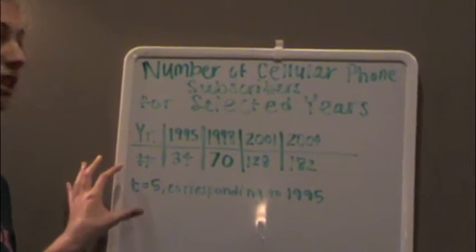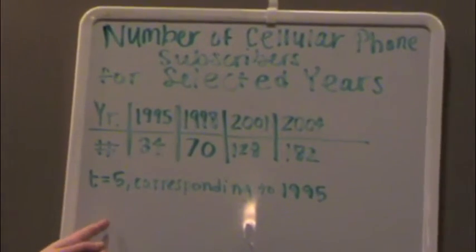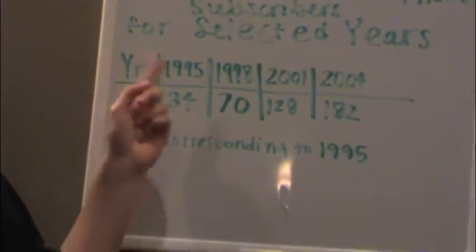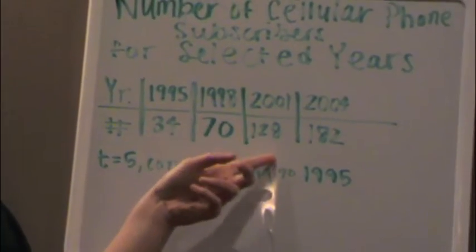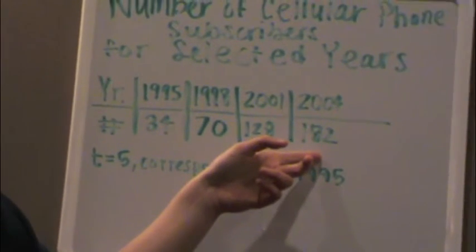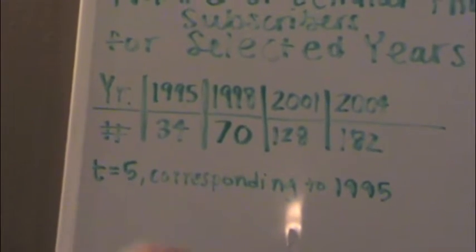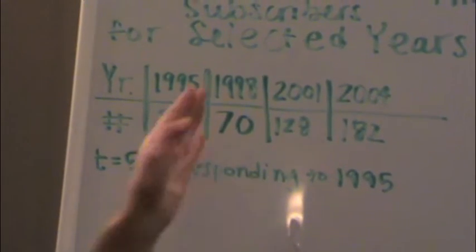So here we have some real-life data for the number of cell phone subscribers for selected years. For the year 1995, there was 34. For 1998, 70. 2001, 128. 2004, 182. Then you want to figure out how many cell phone subscribers you would have in future years based on the general trend.